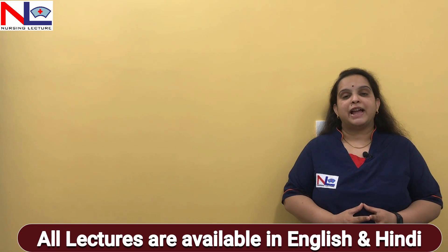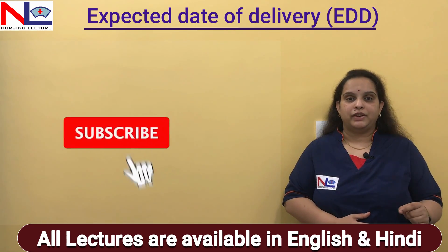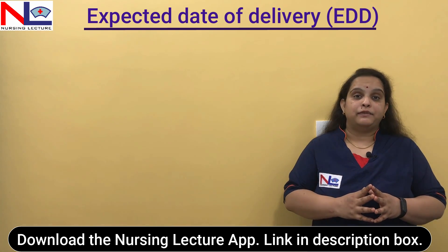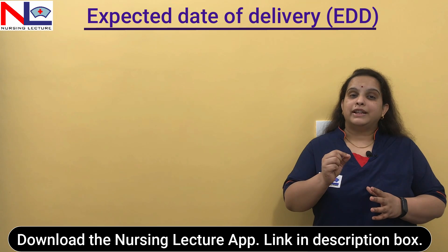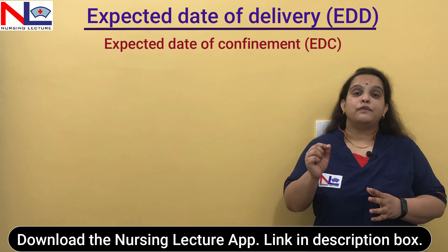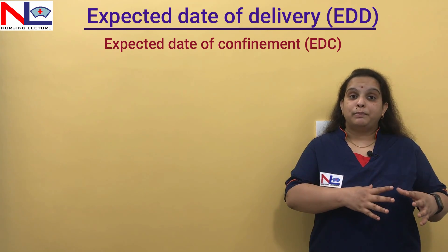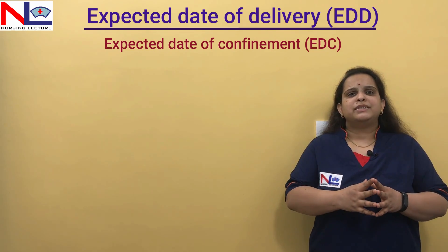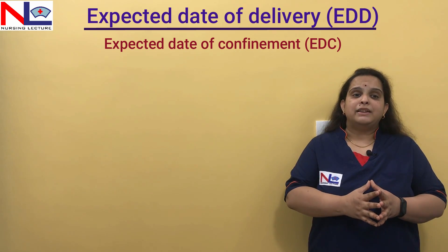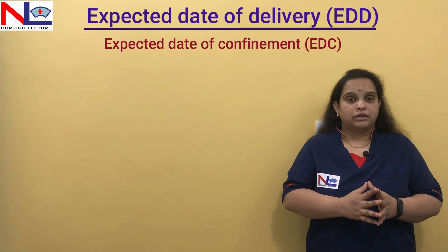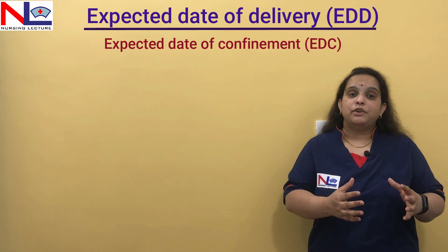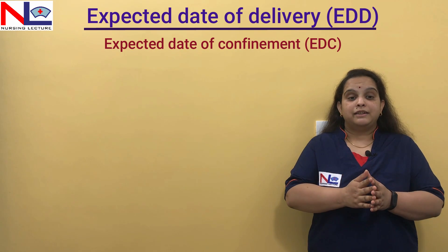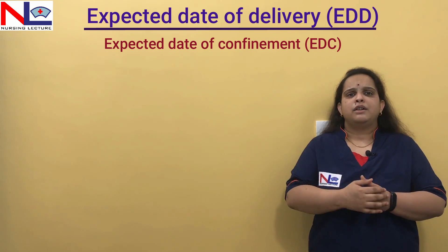In this lecture, I'm going to explain how to calculate EDD — the expected date of delivery, or end date of delivery, where your pregnancy is going to terminate and you are ready for the delivery process. EDD is also termed as EDC, the expected date of confinement, where you are confined to one place to take proper rest and avoid complications associated with pregnancy and labour. This date is calculated by a doctor when you visit the hospital after getting pregnant.